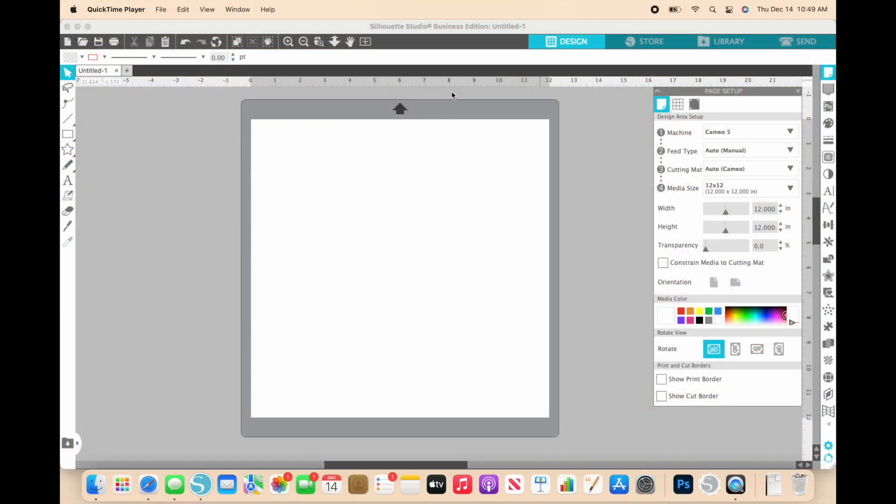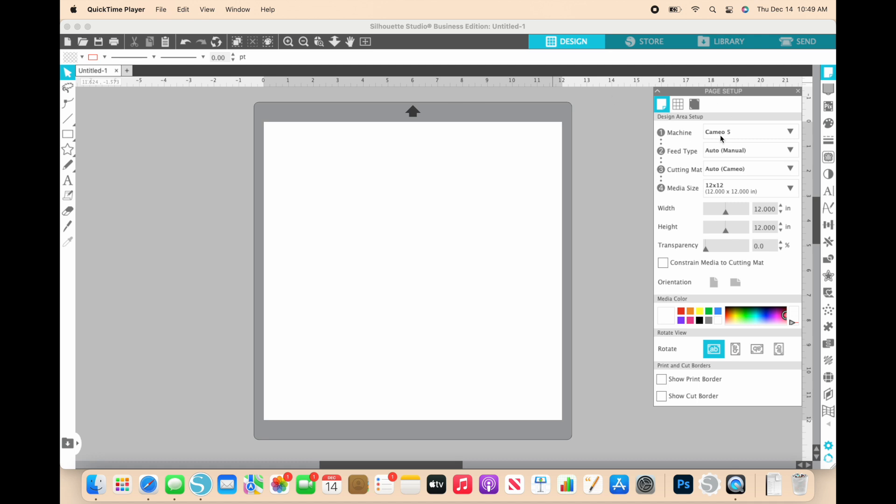So here in the Silhouette software, I have it set up for my Cameo 5. And I actually used a cutting mat last time, but today I'm cutting matless. So I'm going to turn that to none on my cutting mat, selection number three. And that's all I need to do to set up my project.